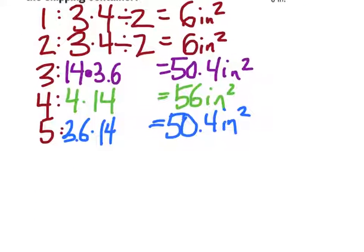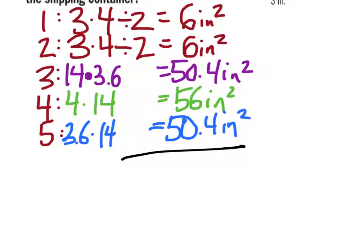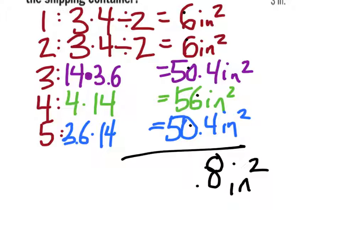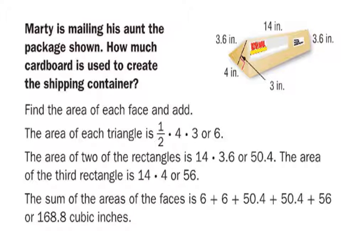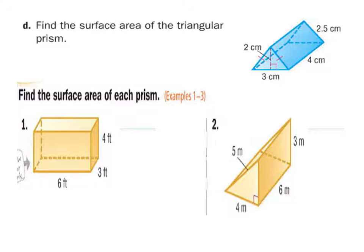Adding all the surface areas together: 6 + 6 + 50.4 + 56 + 50.4 gives us 168.8 square inches as the total surface area. Note that even though it may say cubic inches somewhere, since this is surface area, the correct unit is inches squared.